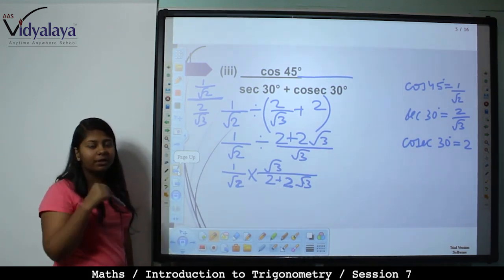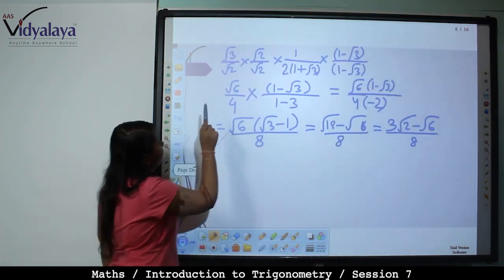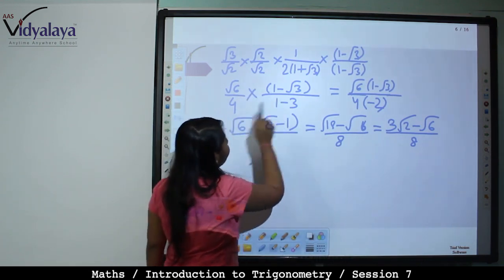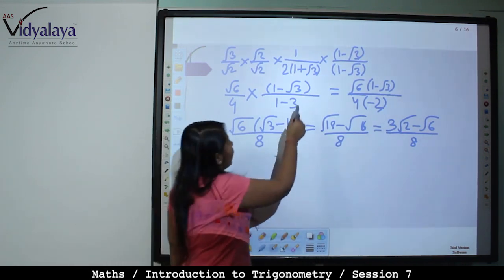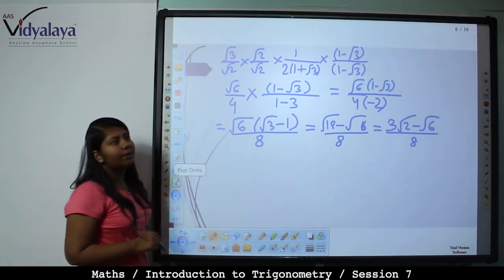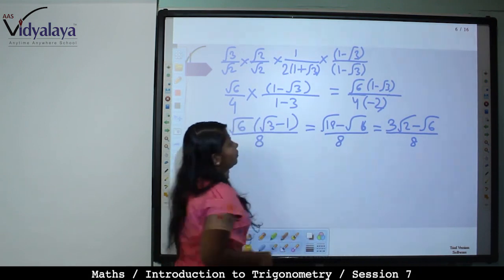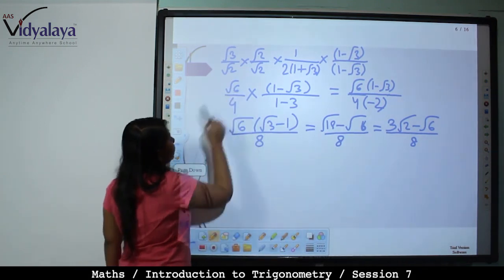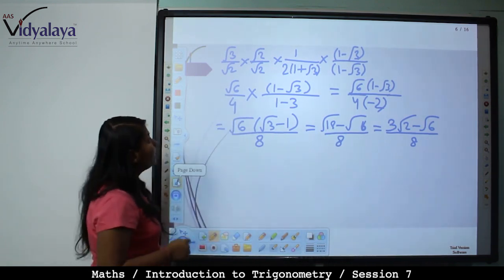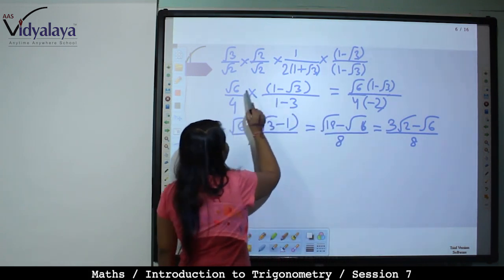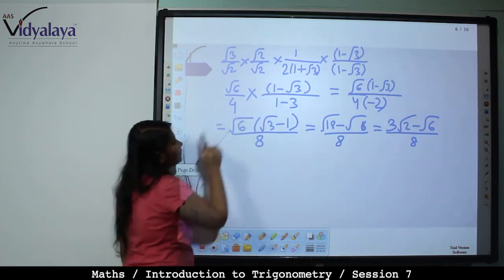Multiply numerator and denominator by 1 minus root 3. So numerator: root 3 by root 2 into root 2 by root 2 into 1 by 2 into (1 plus root 3). Root 3 multiplied by root 2 is root 6. So root 6 upon root 2 into root 2 is 4, multiplied by (1 minus root 3). Root 2 multiplied by root 2 is 2, and 2 multiplied by 2 is 4.